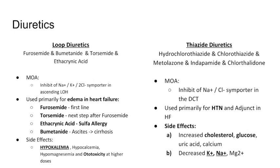Just remember: furosemide is our first line for edema and heart failure. Torsemide is our second line because it's a little bit more potent. Ethacrynic acid is our loop diuretic used in those with sulfa allergy. And bumetanide has a special role because it's a little bit more bioavailable, so we can use it in patients with ascites from liver cirrhosis.